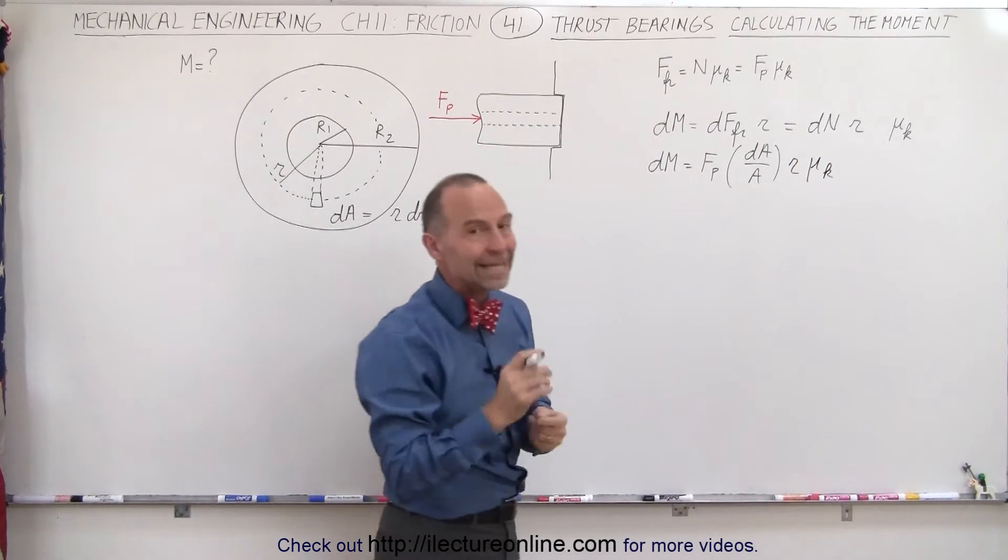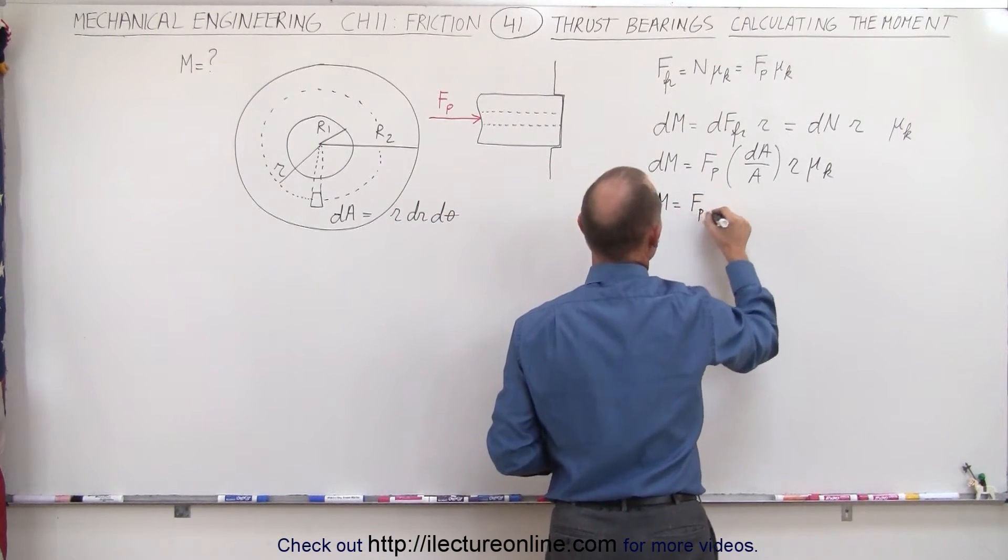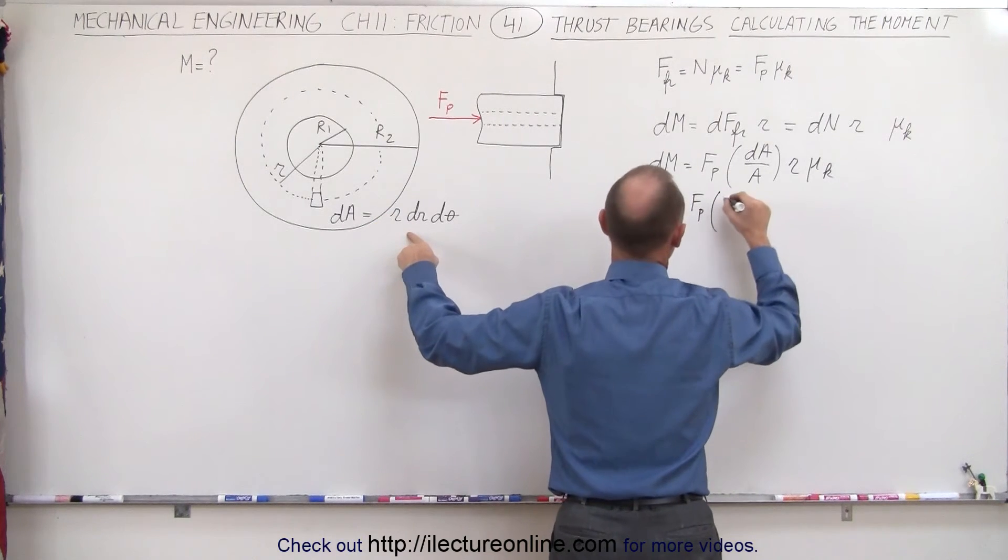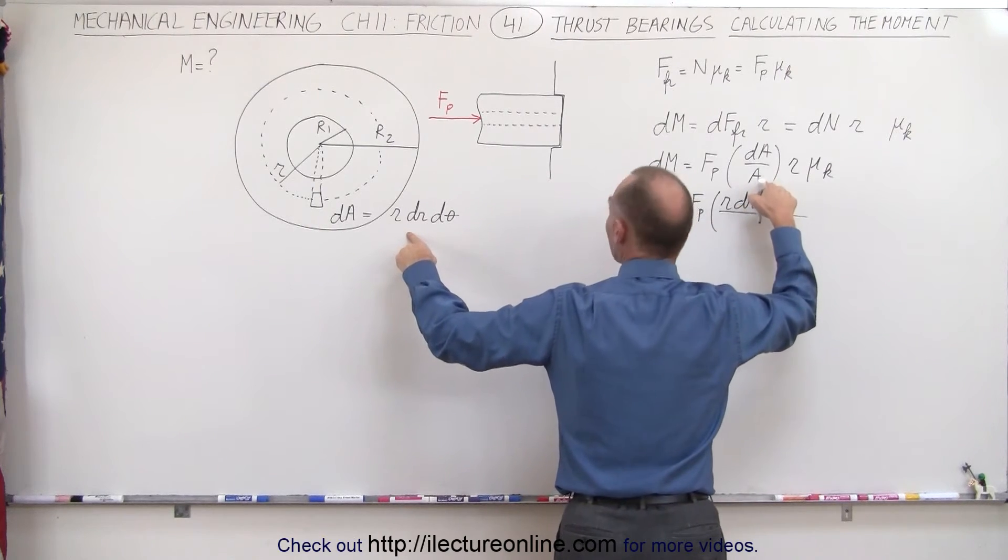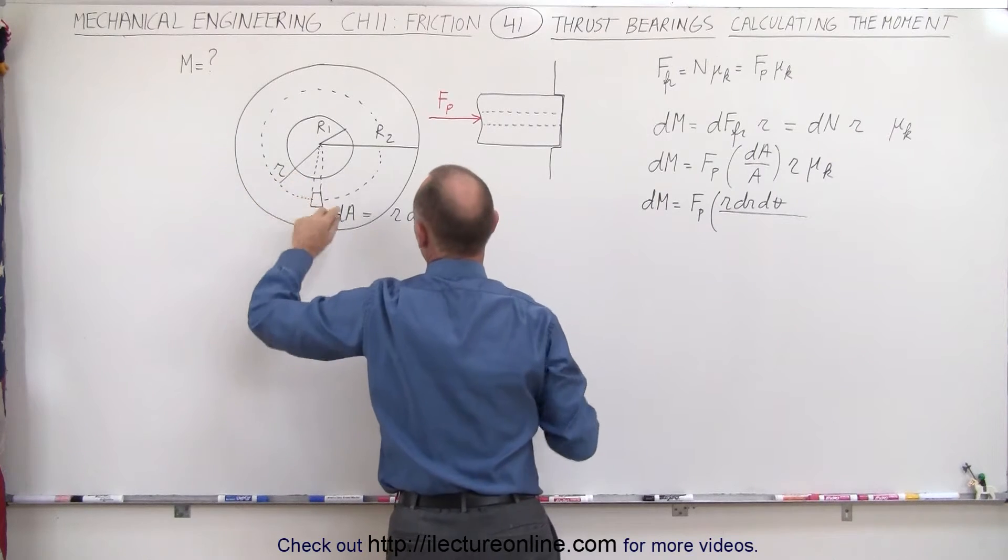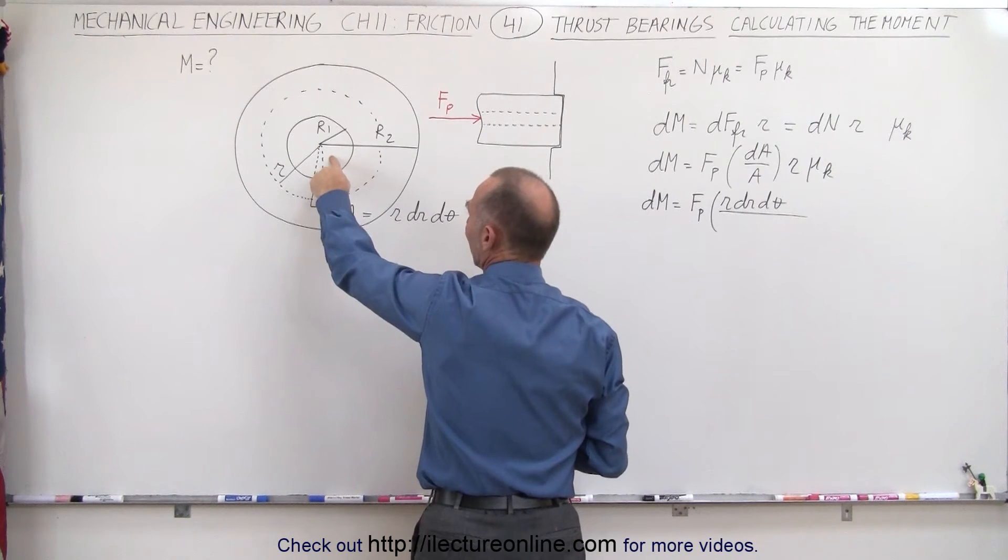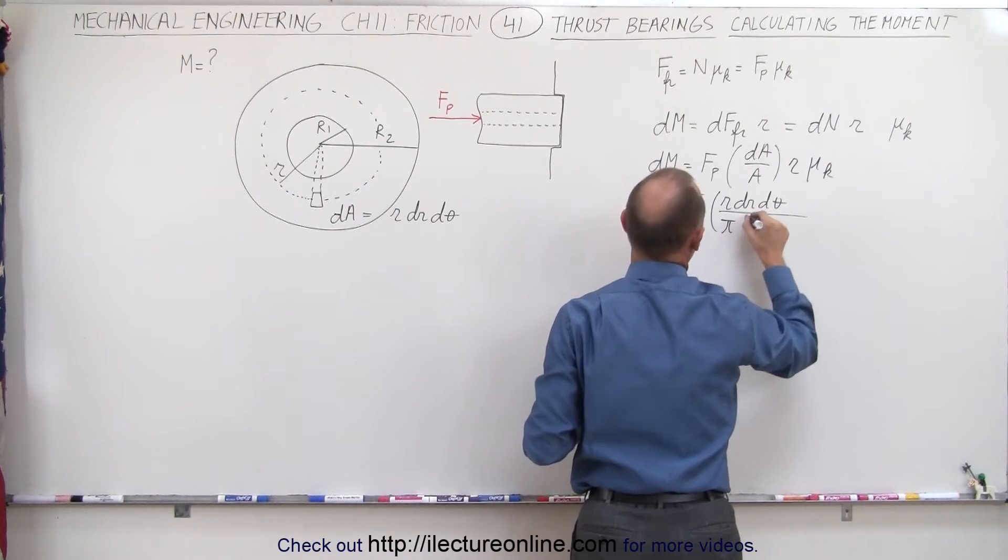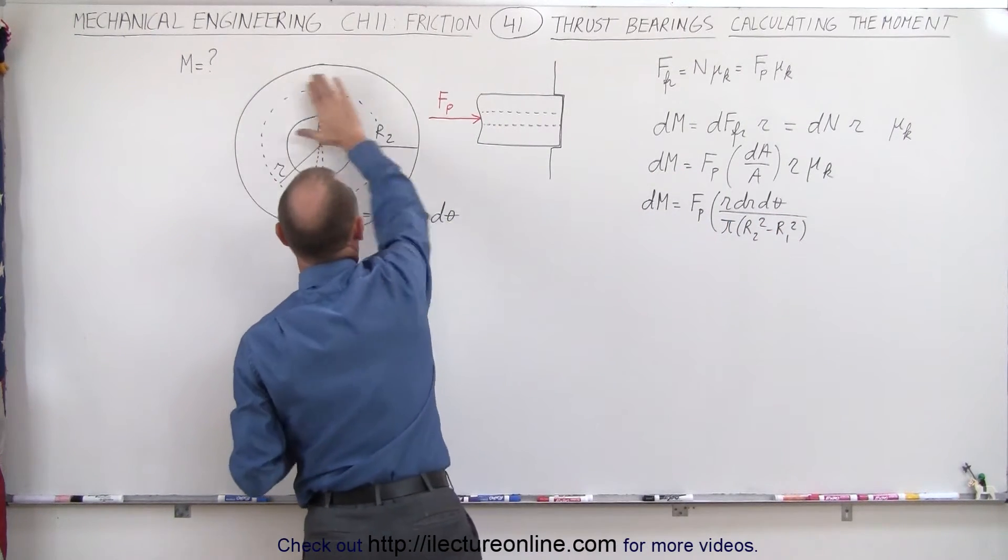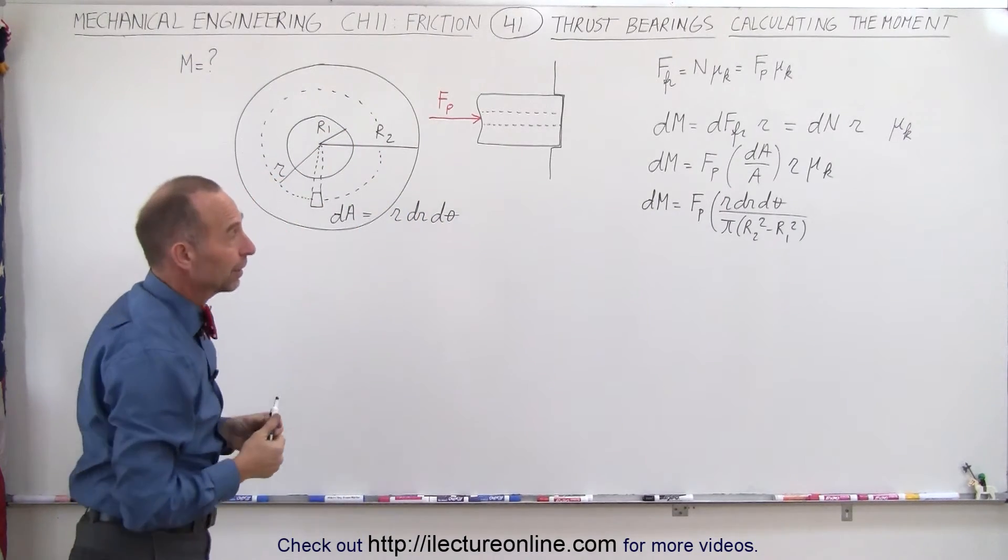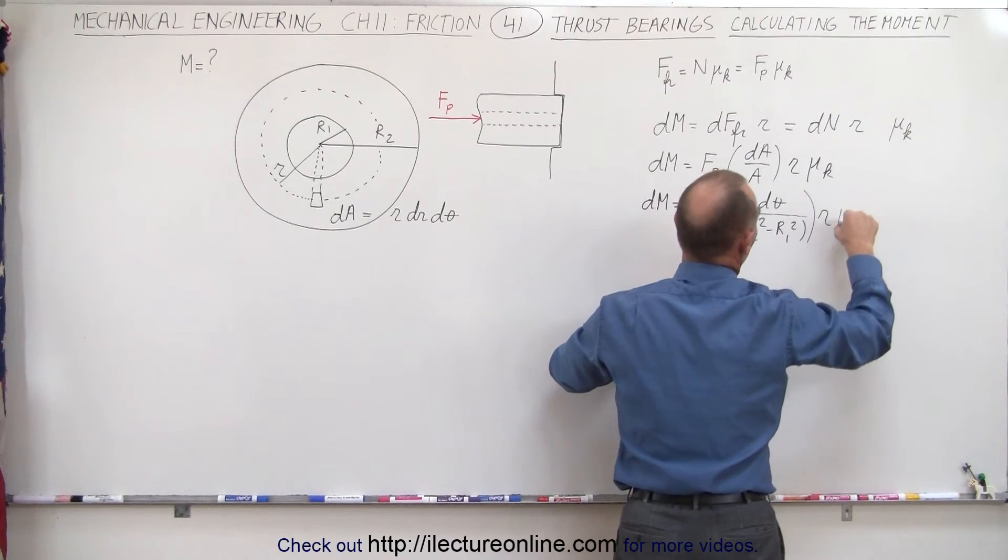And now all we have to do is relate dA to the total area. And so dm can now be expressed as being f sub p times dA, which is defined here, r dr d theta divided by the area of the surface here. Now, of course, if this r1 is 0, it simply would be pi r squared. But we'll have to subtract the pi r1 squared from that. So this would be pi times r2 squared minus r1 squared, which is the surface area of this portion of the bearing, excluding the hole that's in the middle there. So that would be the dA divided by the total area times r times mu sub k.